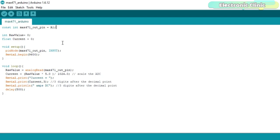This program can be downloaded from our website electronicclinic.com. You can find a link in the description. The purpose of this program is to read the out pin of the MAX471 module and display the current value on the serial monitor. I have already uploaded this program. Let's watch this project in action.